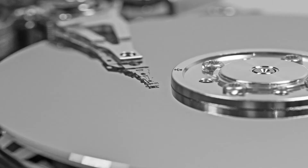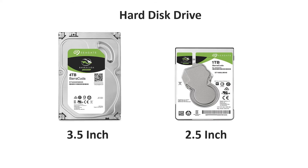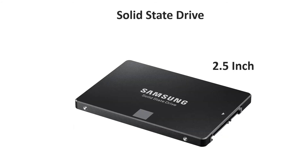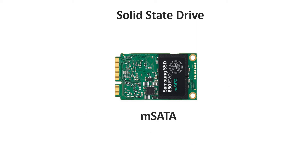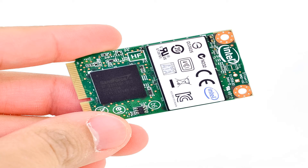Now let's compare the two drives in terms of form factor. Today's hard disk drives are typically available in two form factors: 3.5-inch for desktops and 2.5-inch for laptops. On the other end, SSDs are available in many form factors. The most common is the 2.5-inch form factor, where these drives can be used as a replacement for hard disk drives. Apart from this, mSATA and M.2 SSDs are available in very small form factors and are used in ultrabooks and tablets.